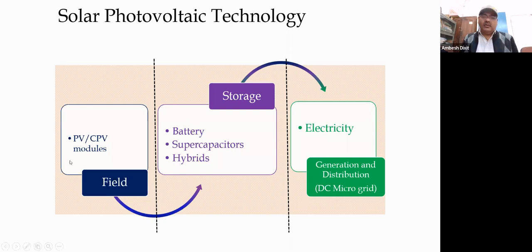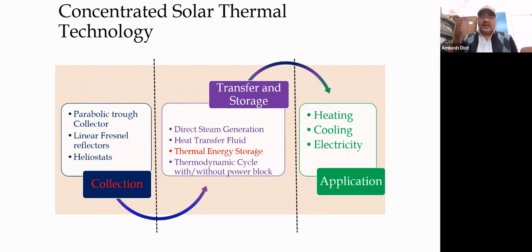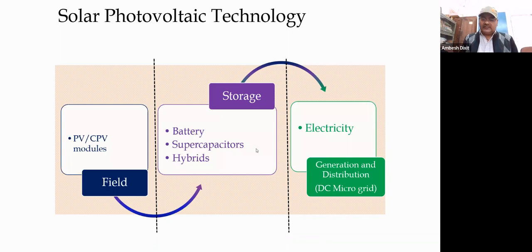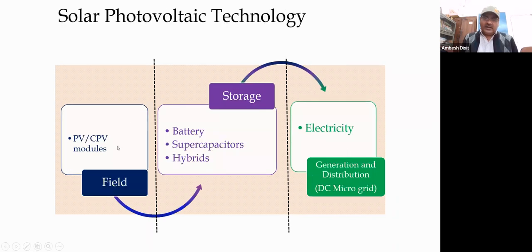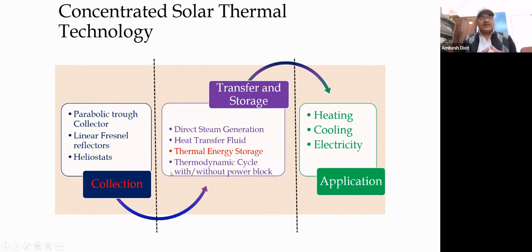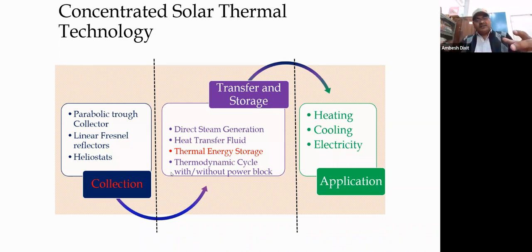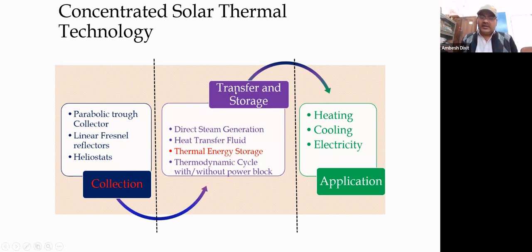An alternative technology is solar thermal, where we concentrate the sun's energy and convert it into thermal energy rather than directly into electricity — similar in principle to coal or nuclear power plants, which heat water into steam to drive electricity generation. These collectors require different technology, and again we need thermal storage — thermal batteries — to store and release thermal energy during non-sunlight hours.